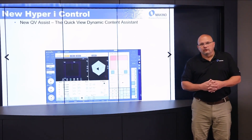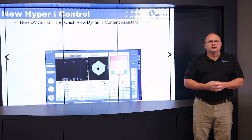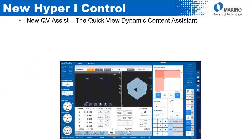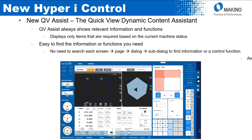The biggest improvement on the new Hyper-I versus the old is the QV Assist window - a quick view dynamic content assistant. It's always going to show the relevant information and functions, and will only display items that are required based on the current machine status. It makes it easy to find the information and functions the operator needs because it will automatically change as needed. There's no need to search through all the pages.